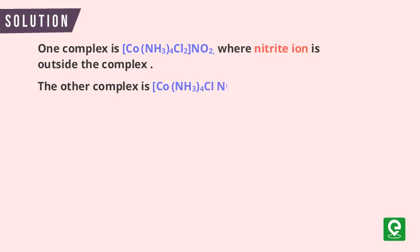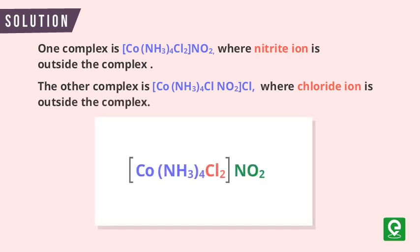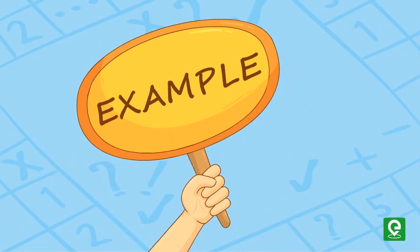The other complex is [Co(NH₃)₄Cl(NO₂)]Cl where chloride ion is outside the complex. Both have the same molecular formula, but there is an exchange of groups between the complex ion and the ions outside. Therefore these two are ionization isomers, hence the correct option is C.